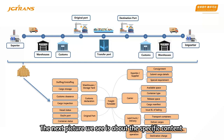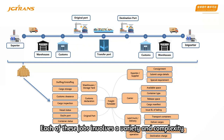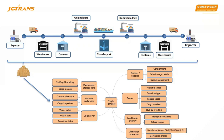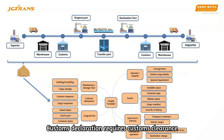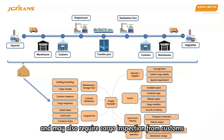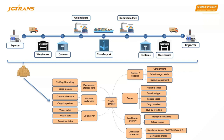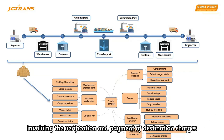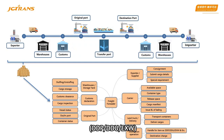The next picture shows the specific content of the work a freight forwarder should handle during the operation of a shipment. Each of these jobs involves variety and complexity — such as warehousing, which means handling the stuffing and unstuffing of goods and cargo storage. Customs declaration requires customs clearance and may also require cargo inspection. When the goods arrive at the destination port, the operation may be more complex, involving verification and payment of destination charges according to trade terms DDP, DDU, and EXW.